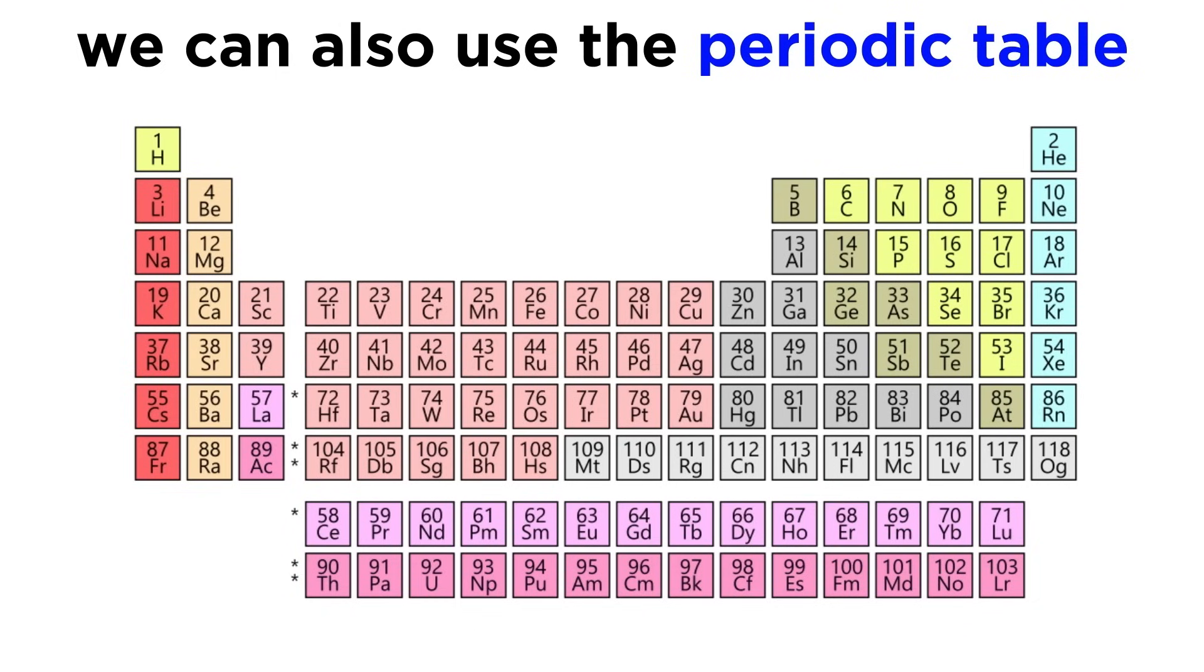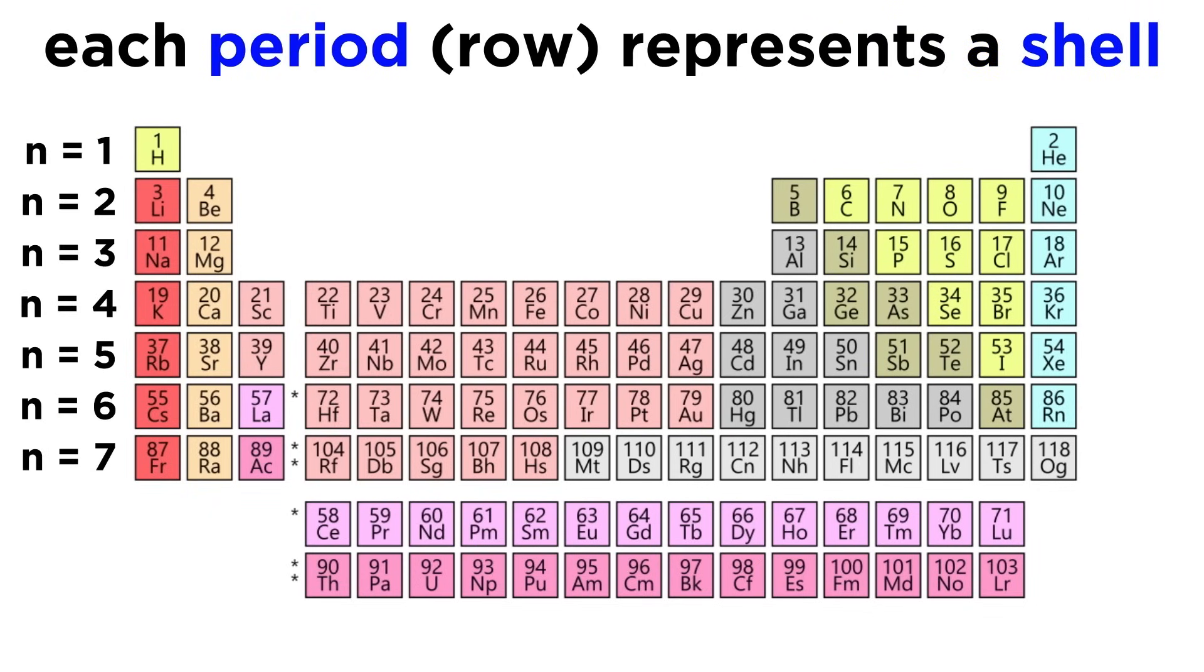An even more convenient way to follow the Aufbau principle is to simply know what sections on the periodic table correspond to which subshells. Looking at the periodic table now, we must understand that each period, or row, on the table represents a shell, or a particular n value. The first row is n equals 1, then n equals 2, and so forth.